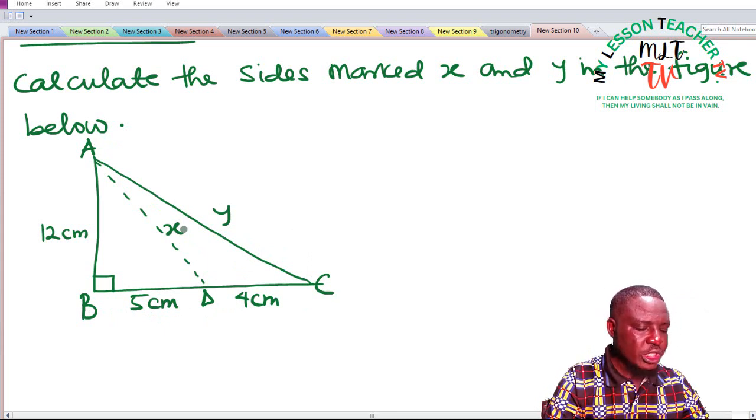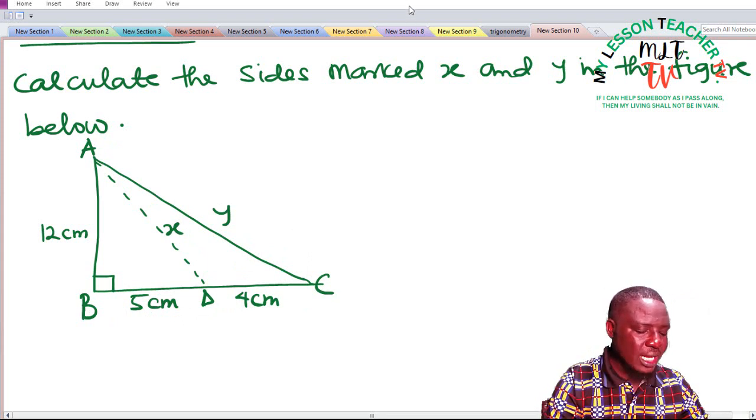We shall apply the Pythagorean theorem in solving this since none of the angles are given. We can easily use the Pythagorean theorem that states that the square on the hypotenuse side is equal to the sum of the squares of the other two sides.